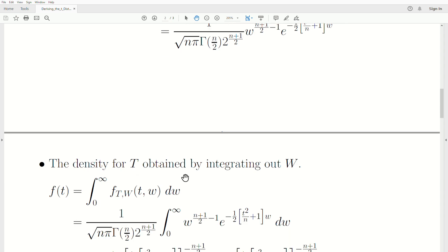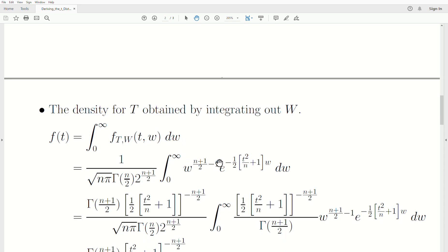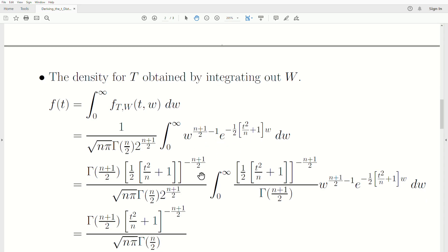So now to obtain the density for T by integrating out W, this is it. So we take the marginal density for T as the integral from zero to infinity of this joint density dW. And we plug in what we derived just a second ago, we take the constants out and leave this expression here.